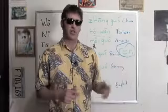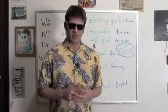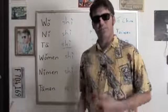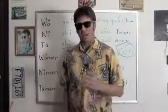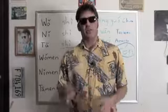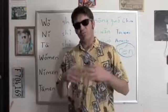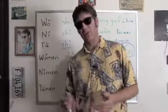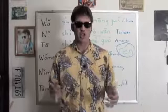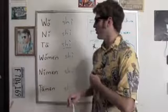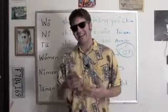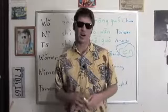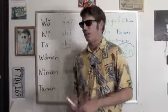他们是英国人 — They are English people. So remember: 人 means a person. We tack 人 onto things to make it 'a person who does something,' like 军人 for soldier — similar to how English adds '-ist' for artist or '-er' for teacher.